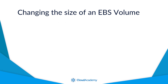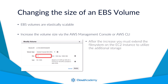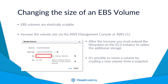EBS volumes also offer the additional flexibility of being able to resize them elastically should the requirement arise. If you are running out of disk space and need to scale up your volume, this can be achieved by modifying the volume within the console or via the AWS CLI. Once the volume has been increased, you would then need to extend the file system on the OS of the EC2 instance to see the new volume. You could also resize a volume by creating a snapshot and then creating a new volume from that snapshot with an increased capacity size.